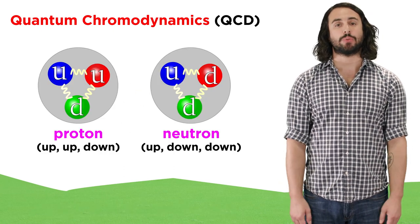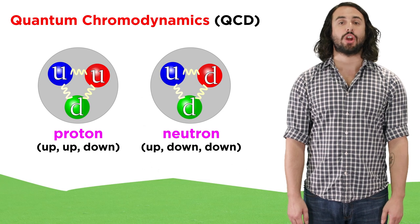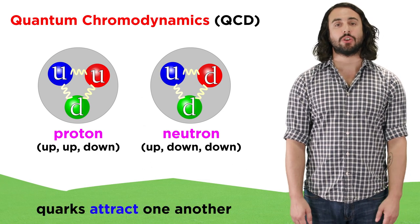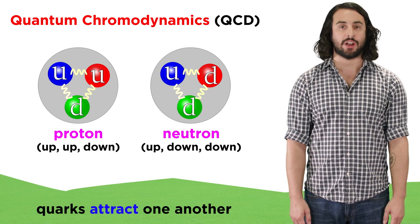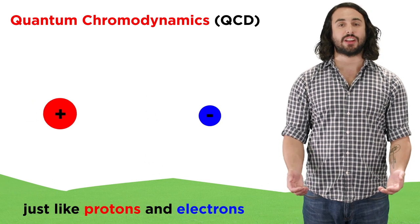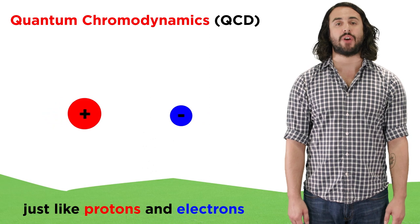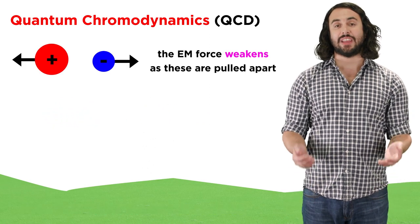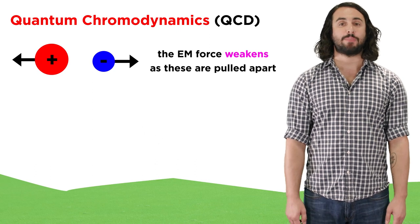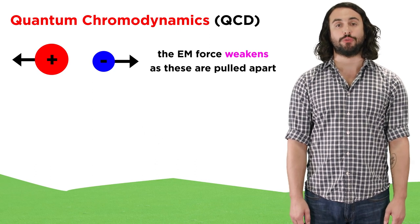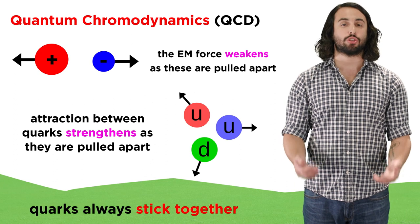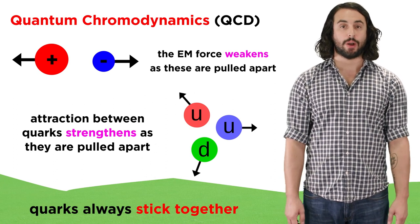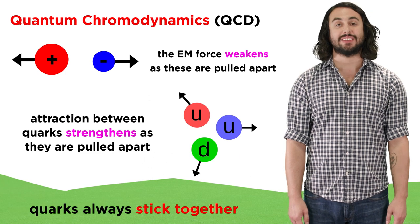Protons and neutrons are each comprised of three quarks, which are forever bound. Quarks of different color charge exert an attractive force between one another, like the electromagnetic force between particles of opposite electrical charge. But the difference is that the electromagnetic force weakens as particles of like charge are pulled further apart, whereas the attraction between quarks will strengthen as they are pulled apart, so they always stick together.